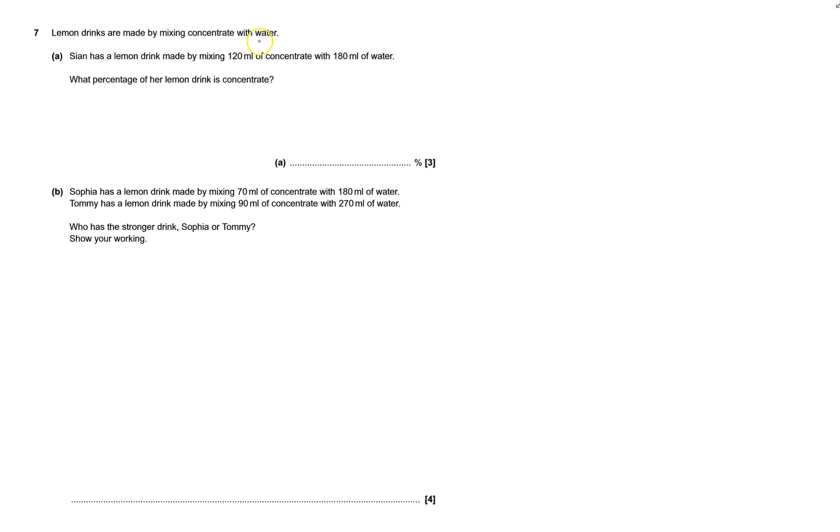Lemon drinks are made by mixing concentrate with water. Sian has a lemon drink made from mixing 120 millilitres of concentrate with 180 millilitres of water.